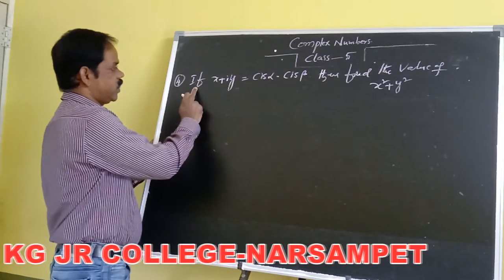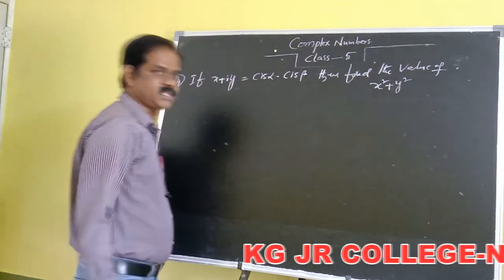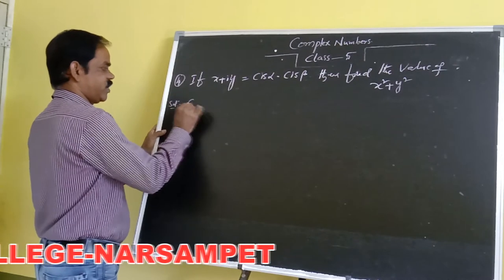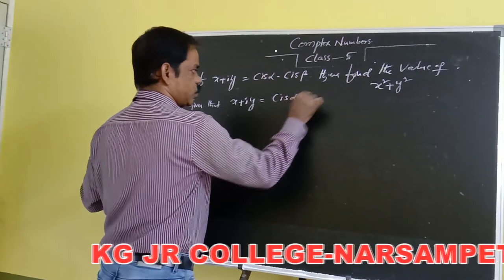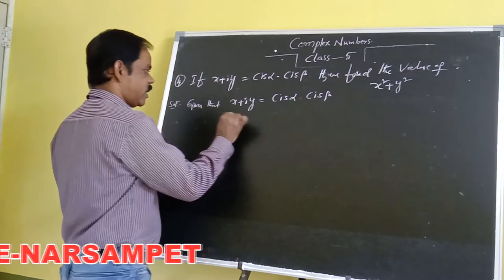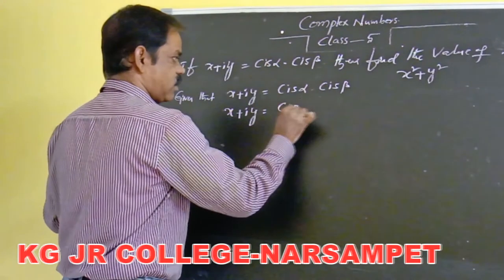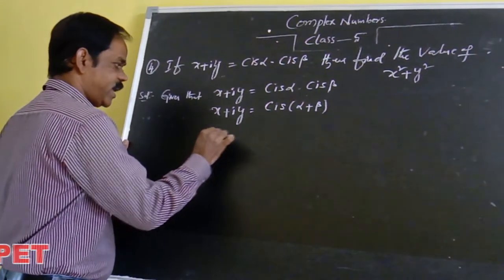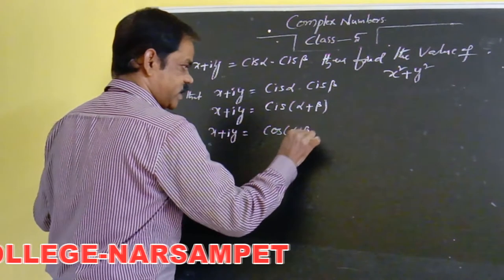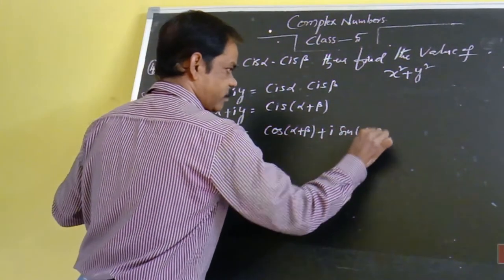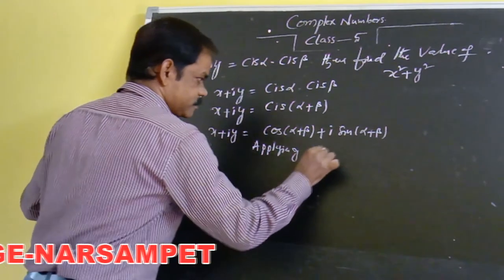Fourth problem: if x plus iy is equal to Cis alpha into Cis beta, find the value of x squared plus y squared. Given that x plus iy equals Cis alpha into Cis beta. By using the second formula, Cis alpha into Cis beta equals Cis of alpha plus beta. The expansion of Cis of alpha plus beta is cos of alpha plus beta plus i into sin of alpha plus beta. Applying modulus on both sides.